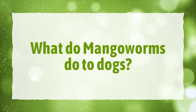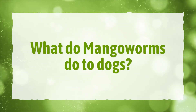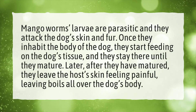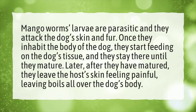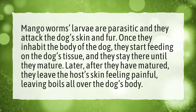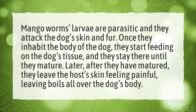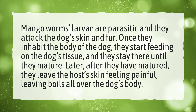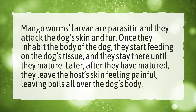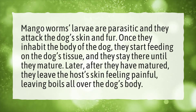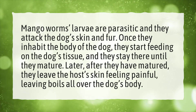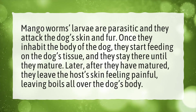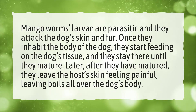What do mango worms do to dogs? Mango worm larvae are parasitic and they attack the dog's skin and fur. Once they inhabit the body of the dog, they start feeding on the dog's tissue, and they stay there until they mature. Later, after they have matured, they leave the host's skin feeling painful, leaving boils all over the dog's body.